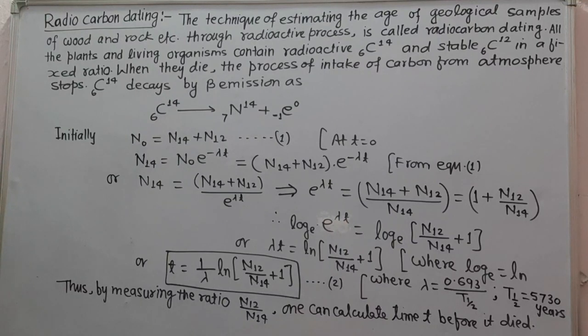Radioactive carbon C-614 decays by beta emission as C-614 decays to nitrogen N-714 plus beta or electron. Initially, N-naught is equal to N14 plus N12. This is the total number of carbon atoms.